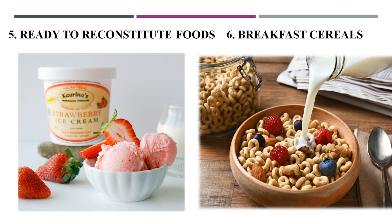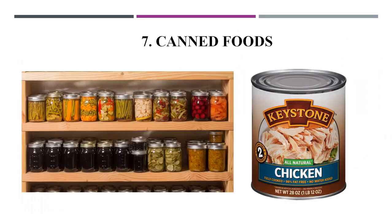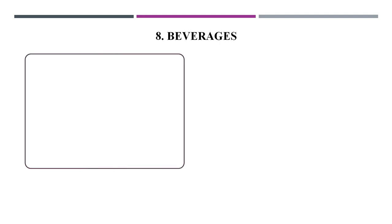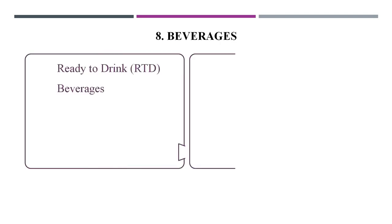Canned foods include fruits, vegetables, pulps, rasagulla, jamun, curries, meat, fish, and chicken as examples of canned foods.